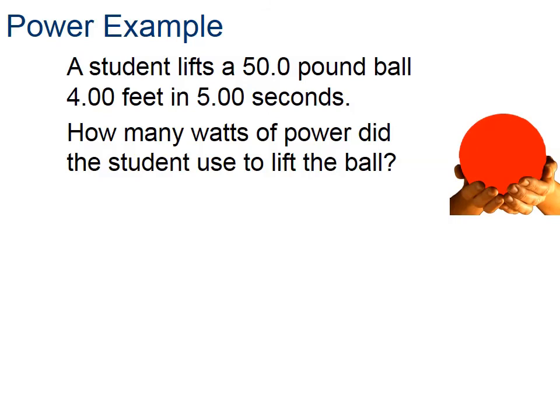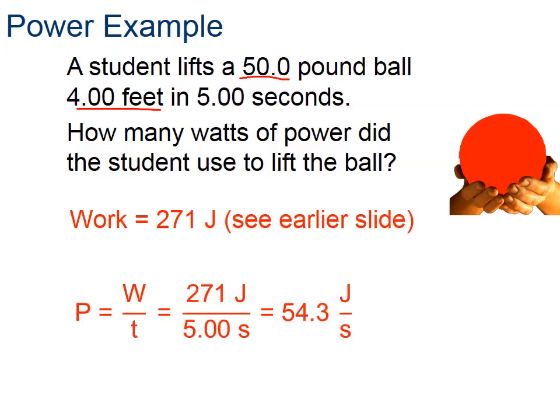So let's apply that concept to the example we had earlier where we had the 50 pound ball. The student was lifting that ball four feet in five seconds. And there's a reason we put the five seconds on that earlier slide, because we wanted to introduce power. So the question now is how many watts of power did the student use to lift the ball? So we calculated energy before. Now all we have to do is divide that energy, which was force times distance, and divide by time. So remember from before we converted pounds to newtons and feet to meters and we came up with 271 joules. When we divide that by five seconds, we actually get 54.3 joules per second or 54 watts.